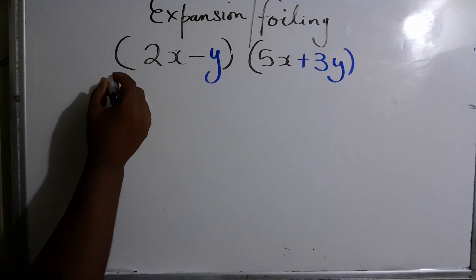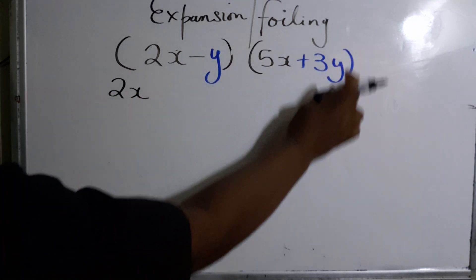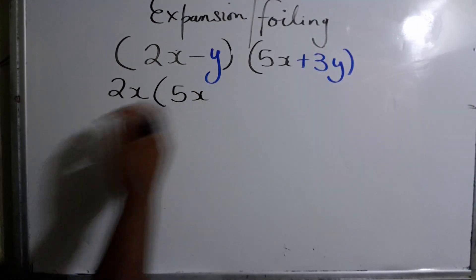As I said, I color code it. So we're going to use 2x and multiply by all of this in the bracket. I color code it so everybody can fully understand.